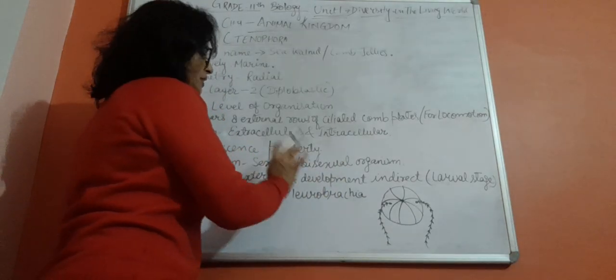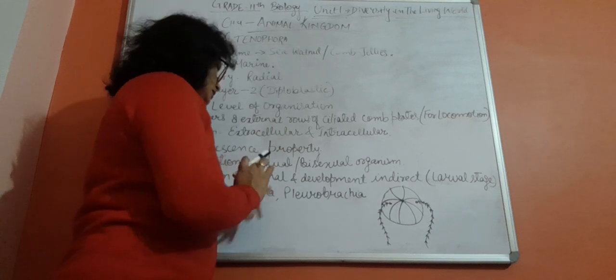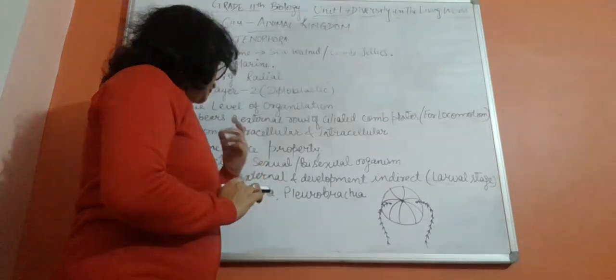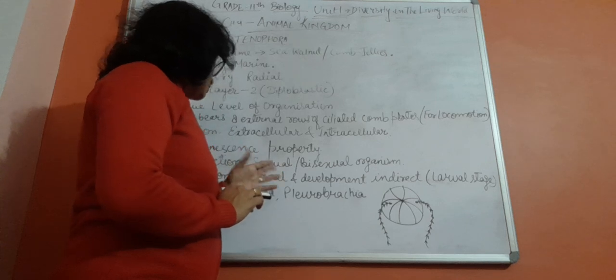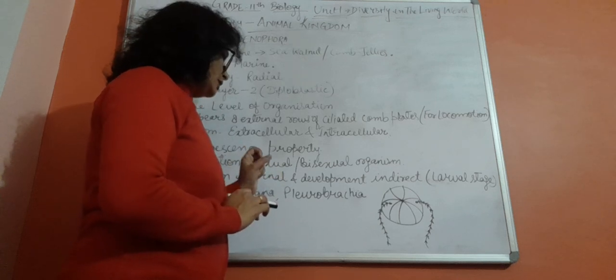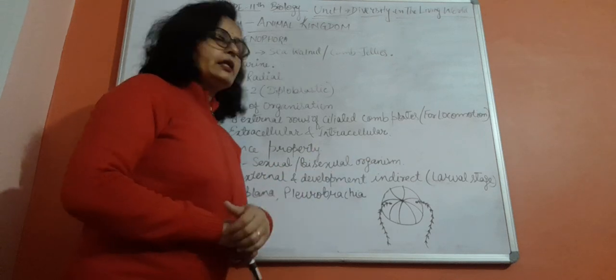Sexual reproduction occurs, but fertilization is external. It needs external medium for external fertilization. And development is indirect.